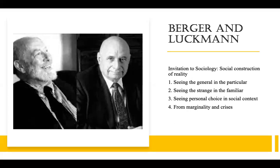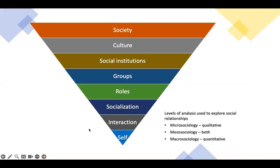Seeing personal choice in social context is also important. You make choices because those choices are available to you, or other factors in society help you decide. There are many things in society that affect our choices without us knowing or acknowledging them. As sociologists, we try to understand all of this. There are different levels: micro-sociology starts with the self, individual interactions, and socialization. There are roles in society — those are all micro-sociology. We do qualitative research to understand micro-sociology.